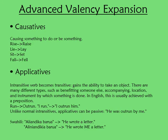As for valency expansion, we have causatives and applicatives, which are both so complex they'll probably take two separate videos. Causatives basically involve causing something to do or be something. In English we have pairs of verbs — one active and one causative. You can 'rise' or 'raise' something; 'lie down' or 'lay something down'; 'sit' or 'set something down'; 'fall down' or 'fell a tree.'